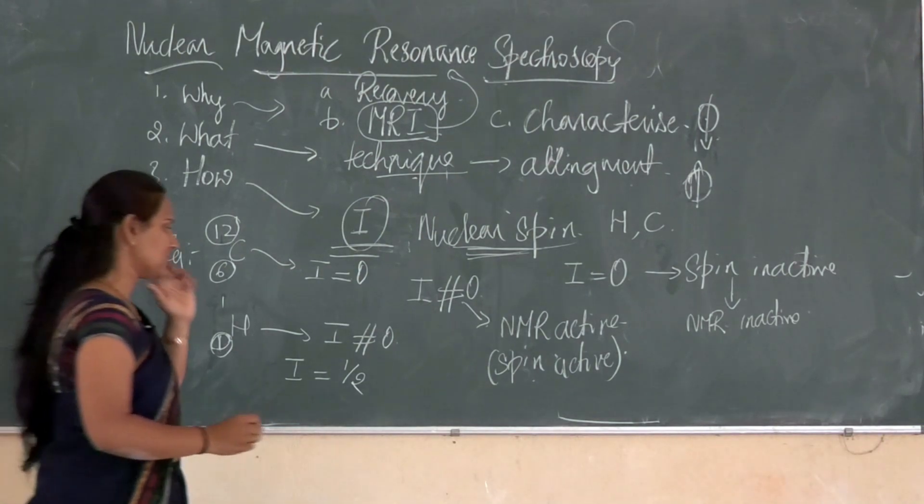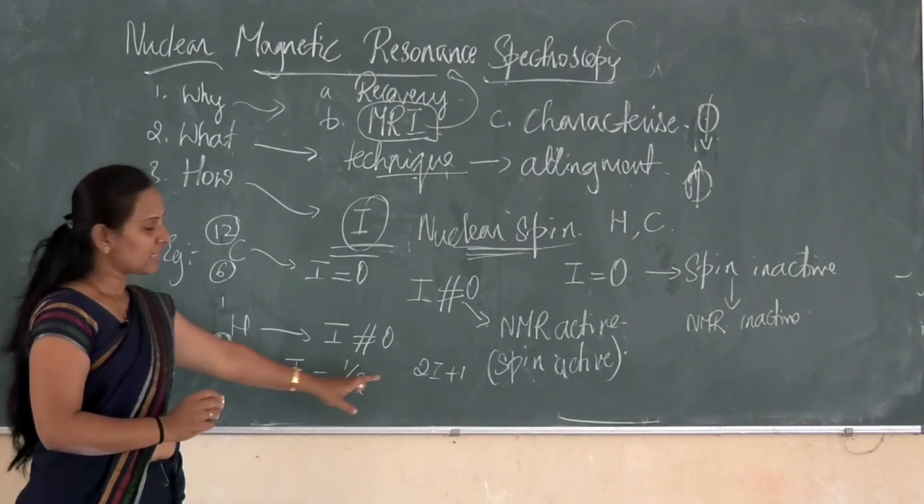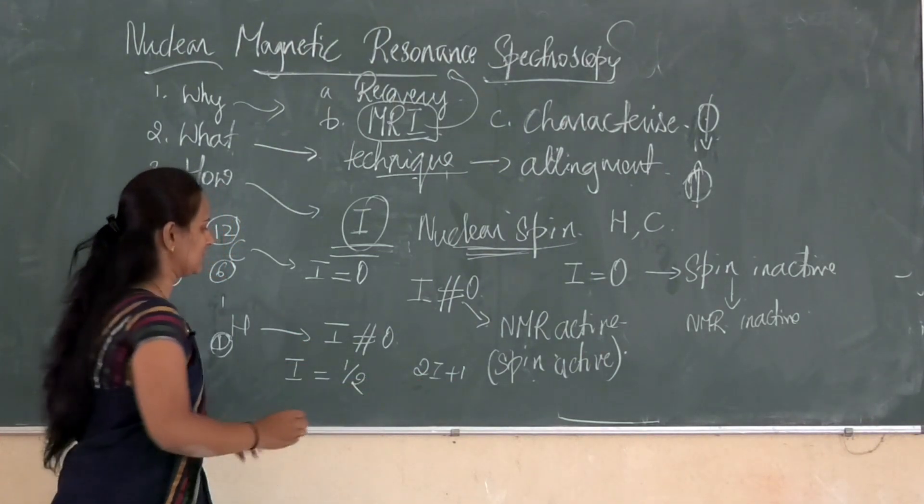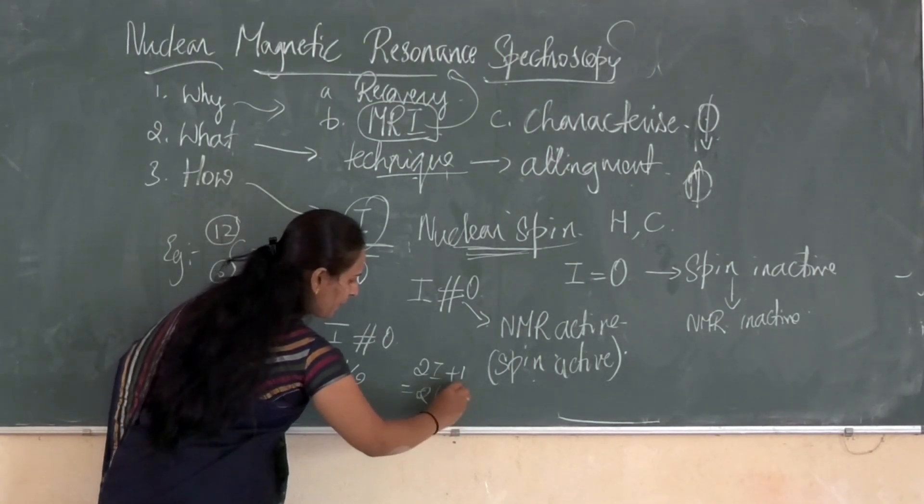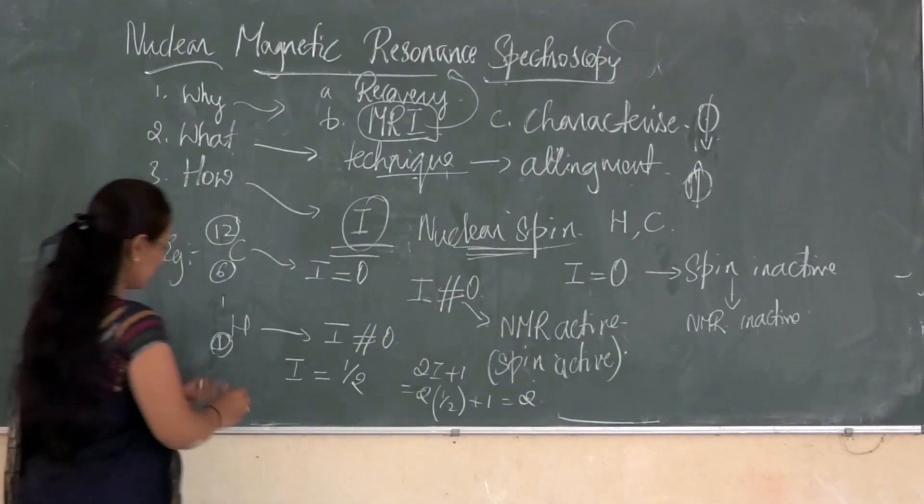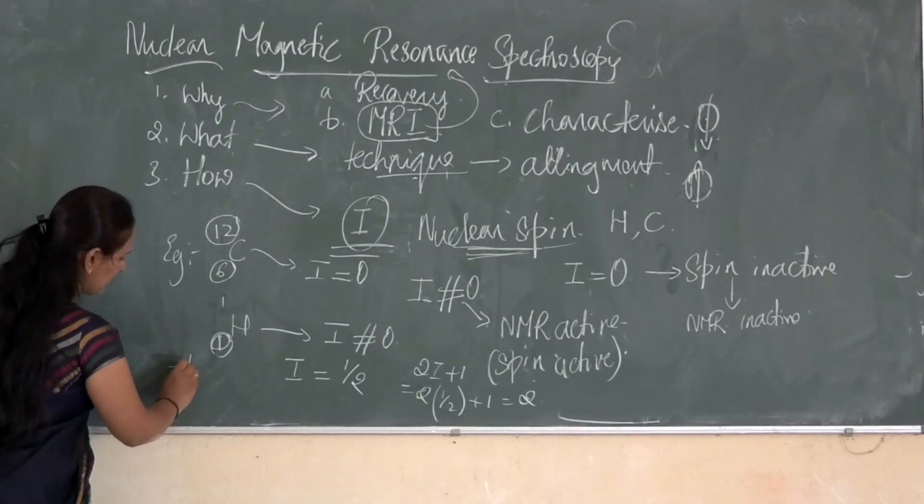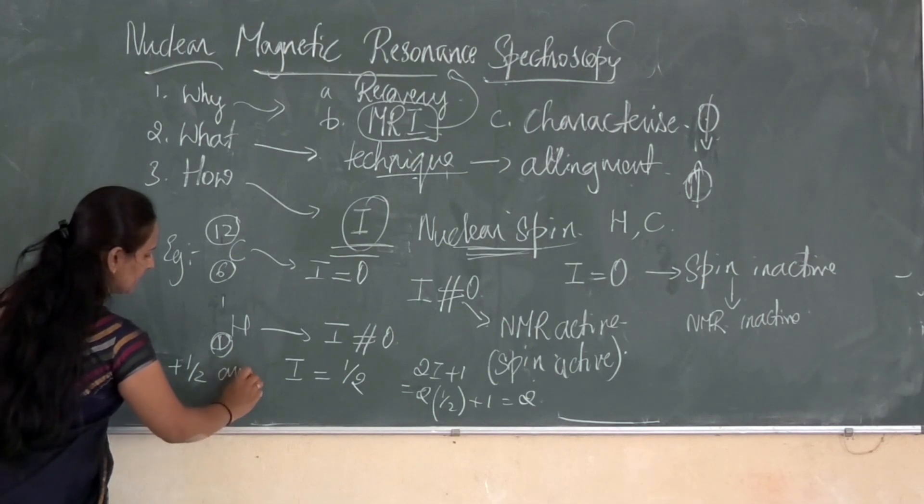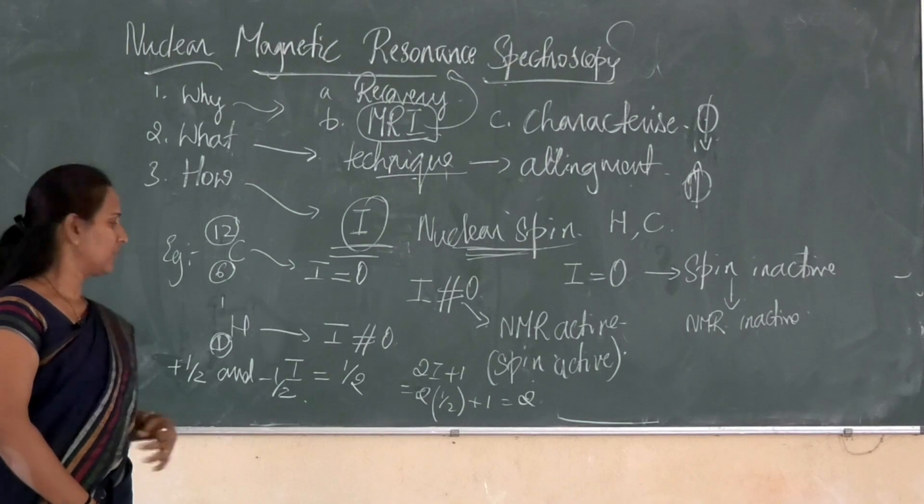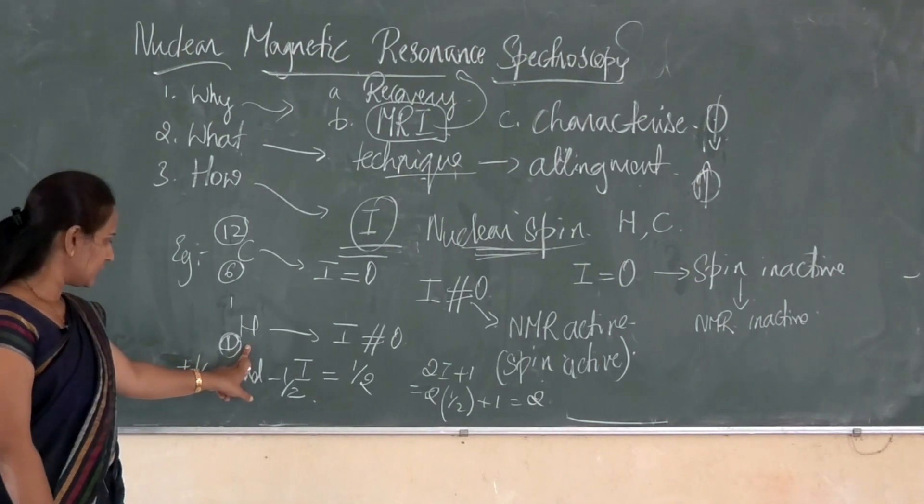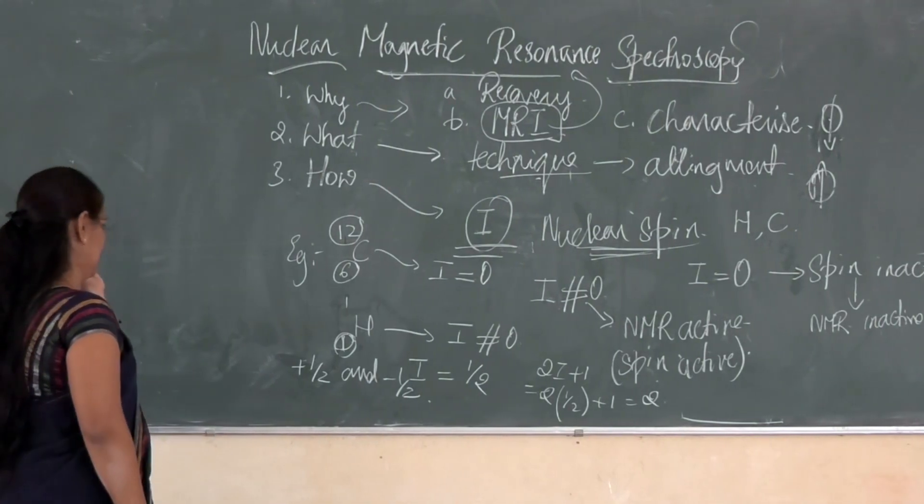There is one rule that is 2I plus 1 rule. Which are the allowed spin transitions? For that 2 into half plus 1 is equal to 2. This allowed transition will be plus half and minus half. The proton or the hydrogen nuclei will give plus half and minus half spin.